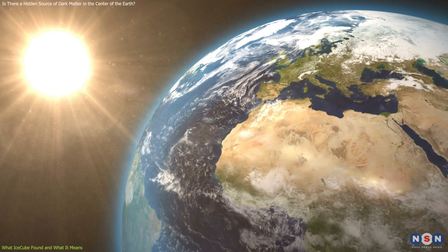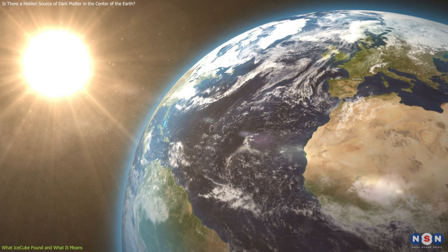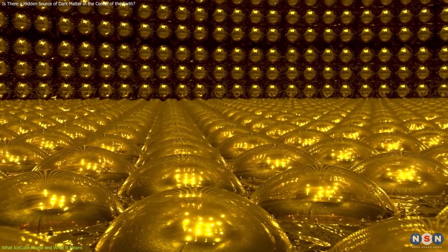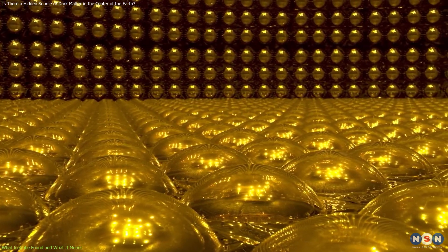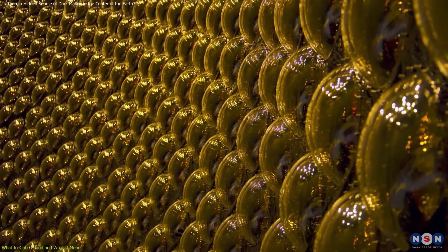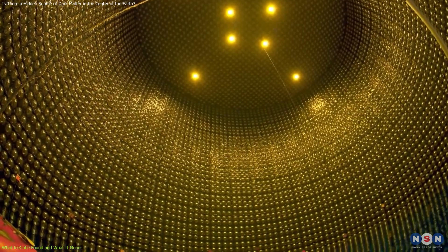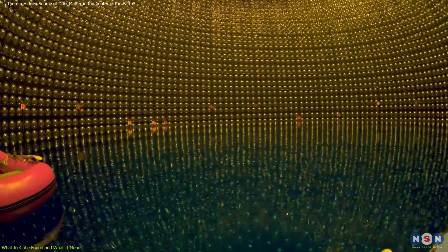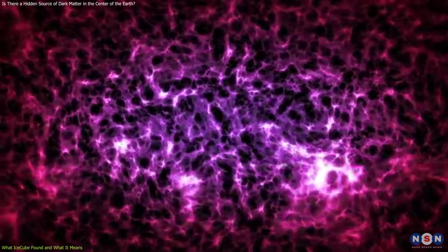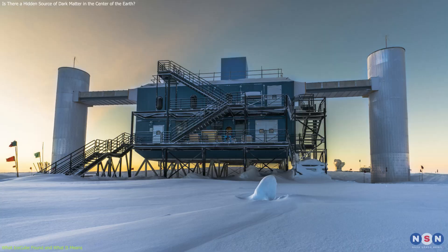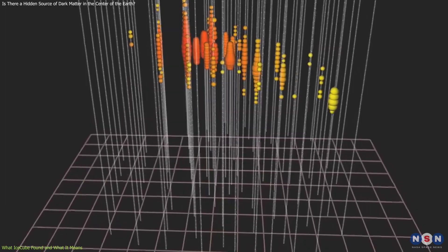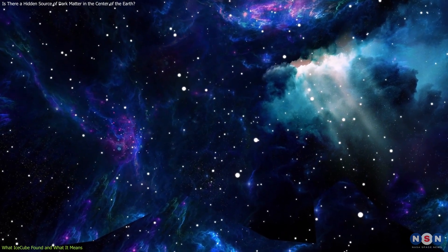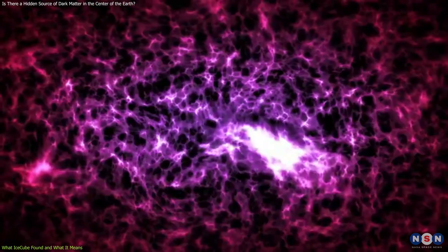To put this result in perspective, we can compare it with other experiments and theoretical models. For example, another neutrino observatory called Super Kamiokande in Japan has also searched for neutrinos from dark matter annihilation in the Earth, but with lower energy and angular resolution than IceCube. Super Kamiokande did not find any evidence of such a signal and set an upper limit on the rate of dark matter annihilation that is compatible with IceCube's result. On the other hand, some theoretical models of dark matter predict that the rate of dark matter annihilation should be much higher than what IceCube or Super Kamiokande can detect, and therefore these models are ruled out by the data. However, there are still many other models that are consistent with the data, and that could explain the origin and nature of dark matter.